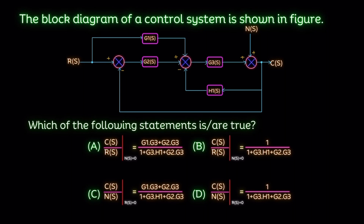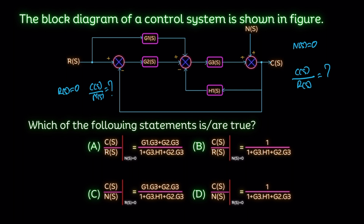The block diagram of a control system is shown in the figure. We need to find which of the following statements are true. There are two cases: the first one is R(s) = 0, meaning we find the closed loop transfer function C(s)/N(s). The second case is N(s) = 0, meaning we find the closed loop transfer function C(s)/R(s).